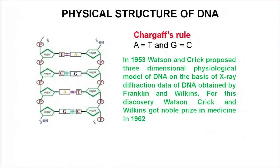RNA has a ribose sugar instead of deoxyribose — again a 5-carbon sugar. The difference between RNA and DNA is that RNA has adenine, guanine, and cytosine the same as DNA, but instead of thymine, RNA contains uracil. The model of DNA was given by Watson and Crick in 1953, and they were awarded the Nobel Prize for their work on the structure of DNA. The sugars and phosphate form the backbone of the DNA, and the nitrogenous bases are present in the center.